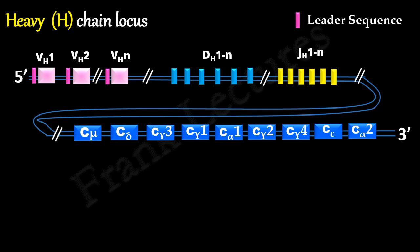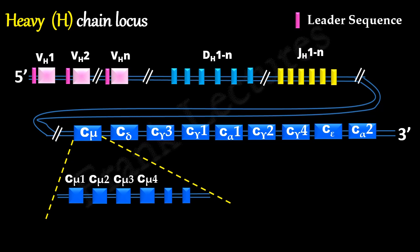These are 9 C genes, each of which correspond to different class and subclass of immunoglobulins. For our illustration, we will take the C mu gene, which encodes the constant region of IgM heavy chain. This C exon is further made up of 6 sub exons. 4 sub exons code for the 4 constant domains of the mu heavy chain, and the other 2 small exons code for the C terminal ends of the membrane bound form of the heavy chain.